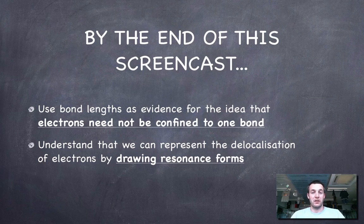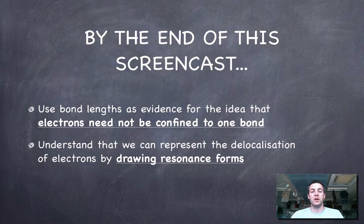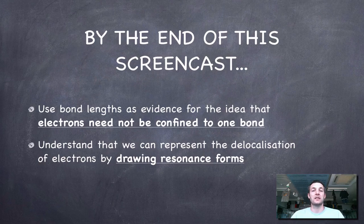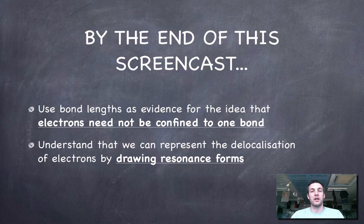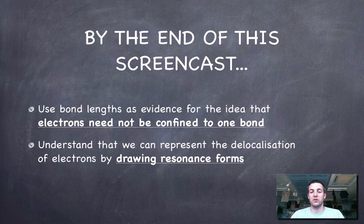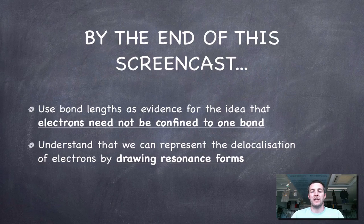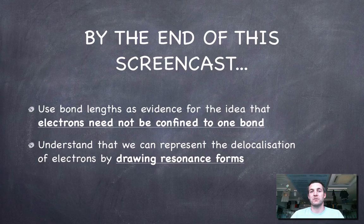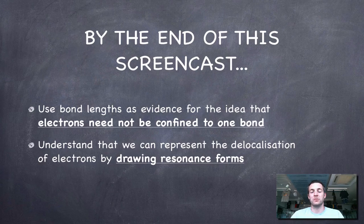Hopefully by now that we're at the end of this film, you understand that this idea that electrons aren't confined to one particular bond is something that we came up with by looking at bond lengths and seeing what that told us about the type of bonding in a molecule. And that by using resonance forms or these alternative Lewis diagrams for a molecule, we can show where it is that the electrons are able to move to.